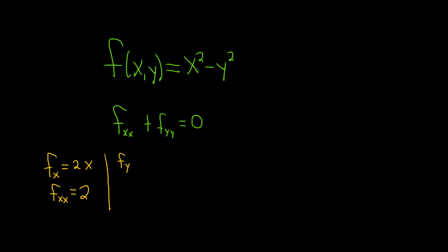The derivative of x squared is zero because whenever you take the partial with respect to y, all of the other variables are constants, so this derivative will be zero and then this derivative here will be negative 2y.